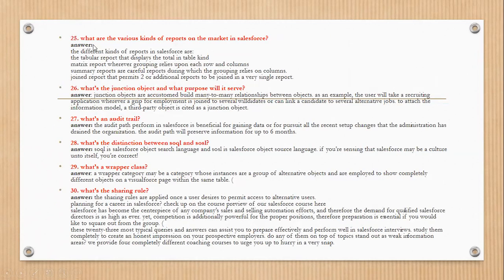The next question is: what are the various kinds of reports available in Salesforce? The different kinds are: Tabular reports, which display data in table form; Matrix reports, which allow grouping by both rows and columns; Summary reports, which allow grouping by columns; and Joined reports, which permit multiple reports to be joined into a single report.